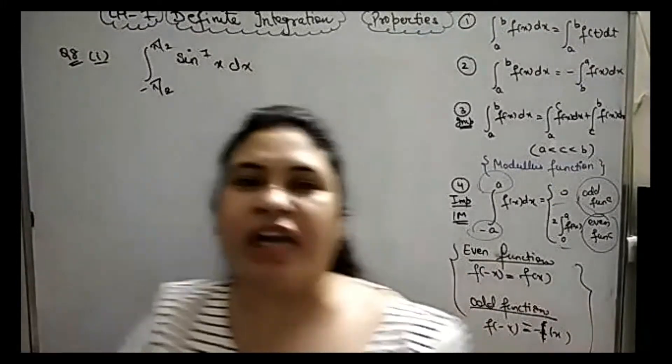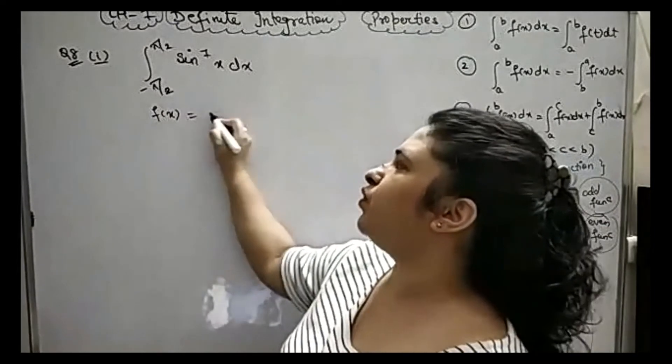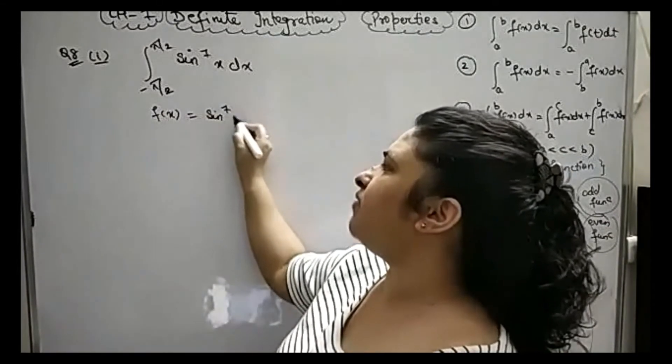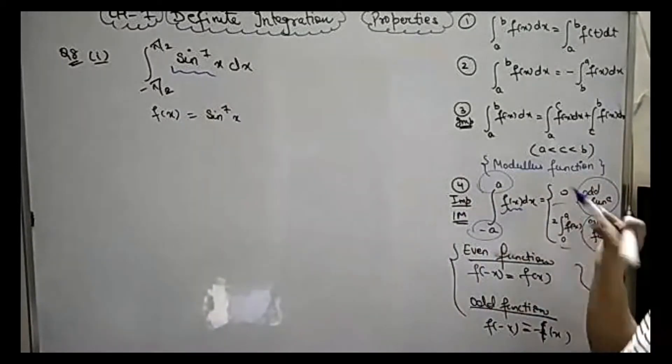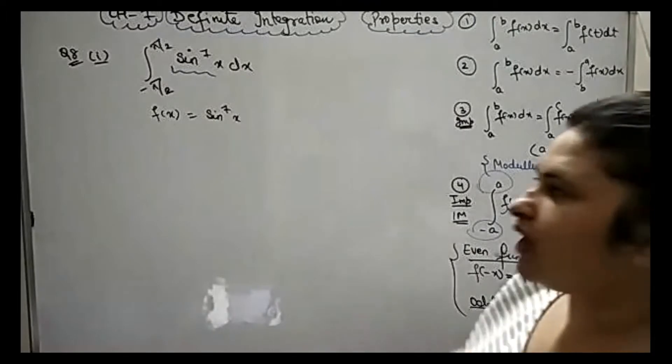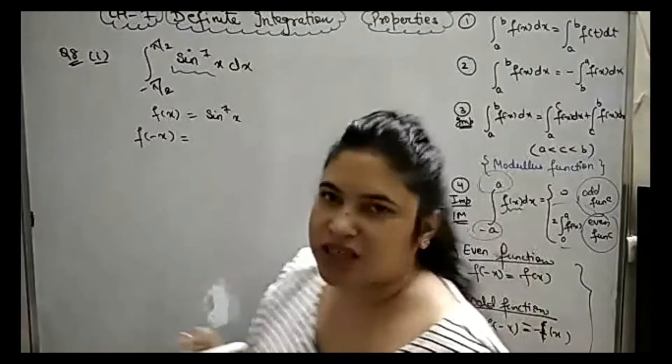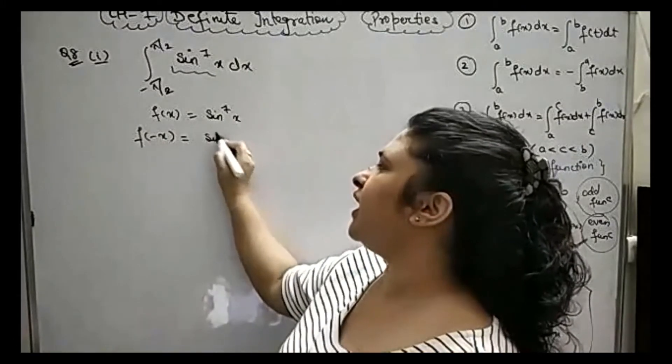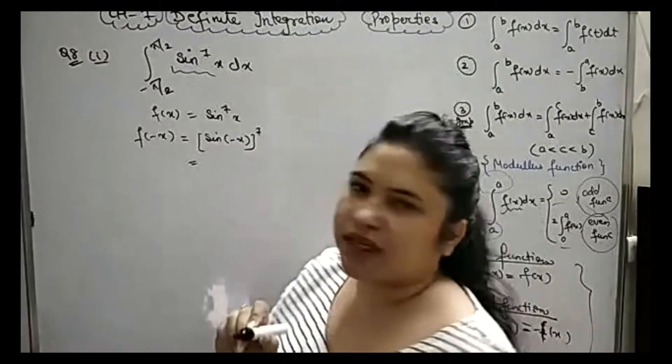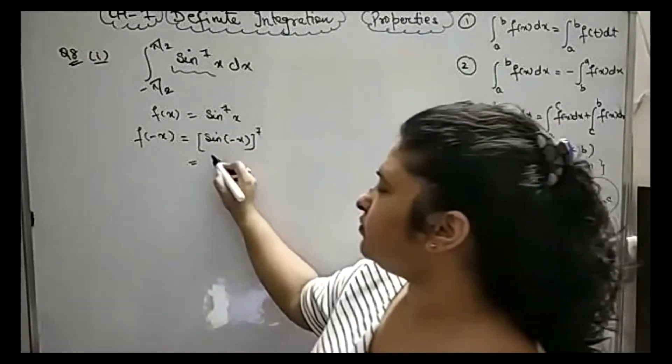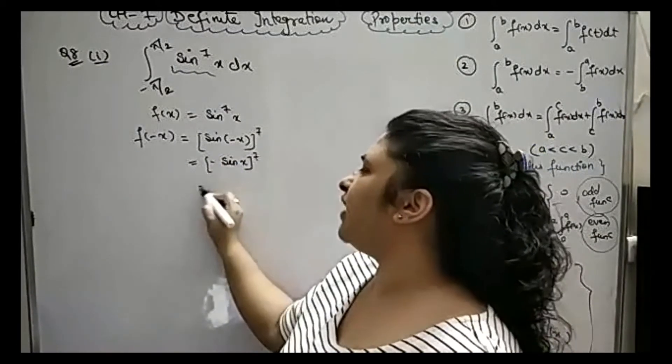In this property, I have to check even and odd function. How do I check? My f(x) is sin to the power n. For even and odd function, I substitute minus x in place of x. What is sin minus x? Sin minus x equals minus sin x. And the power is odd. If the power is odd, the minus sign will remain outside.